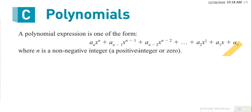Today in this series of lessons we'll be looking at polynomial skills. By definition, a polynomial expression is one of the form a_n x raised to power n plus a_(n-1) x raised to power n minus 1, plus a_(n-2) x raised to power n minus 2, up to a_0, where n is a non-negative integer — that is, whole numbers.